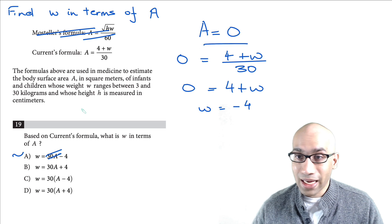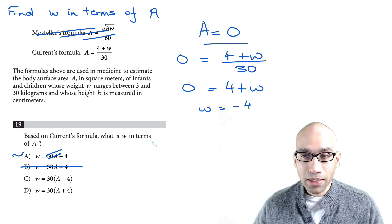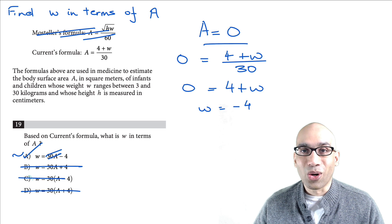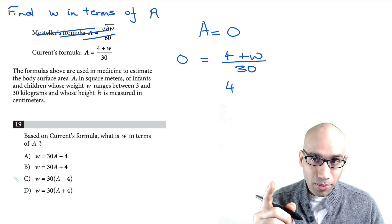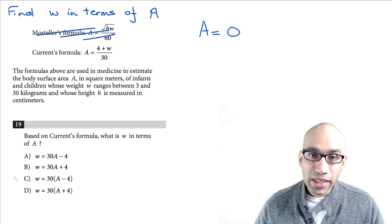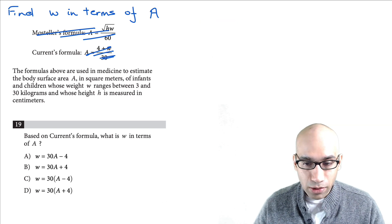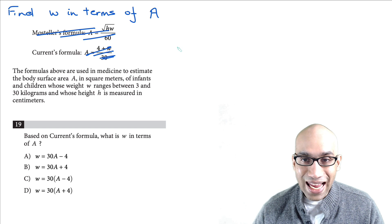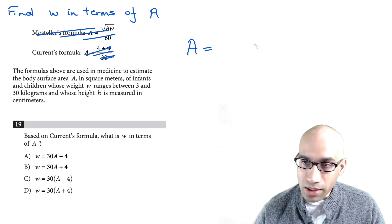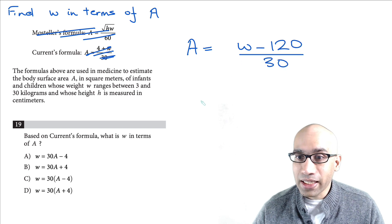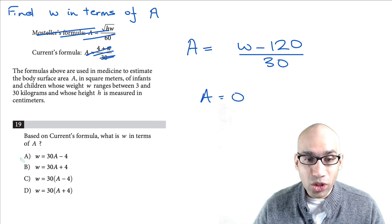When you put a equal to 0 in another choice, you get w equal to 4 — that's clearly gone. Another gives w equal to 30 times negative 4, which is clearly not negative 4, so that's gone too. That's why A is the correct answer. Now try a similar problem using the formula: a equals (w minus 120) over 30.